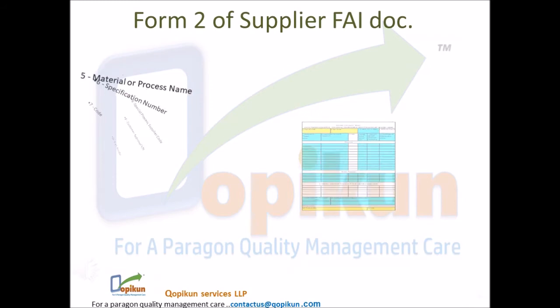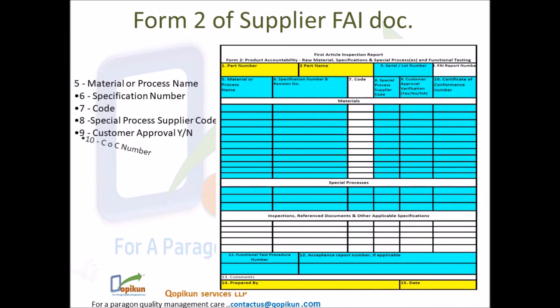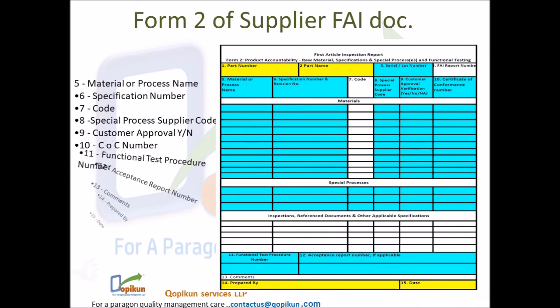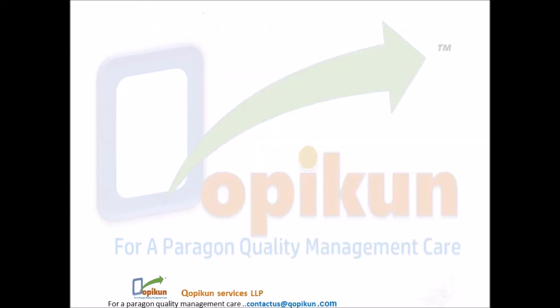Form 2 fields: 5. Material or process name; 6. Specification number; 7. Code; 8. Special process supplier code; 9. Customer approval yes or no; 10. COC number; 11. Functional test procedure number; 12. Acceptance report number; 13. Comments; 14. Prepared by; 15. Date. Form 2 of supplier FAI DOC details.